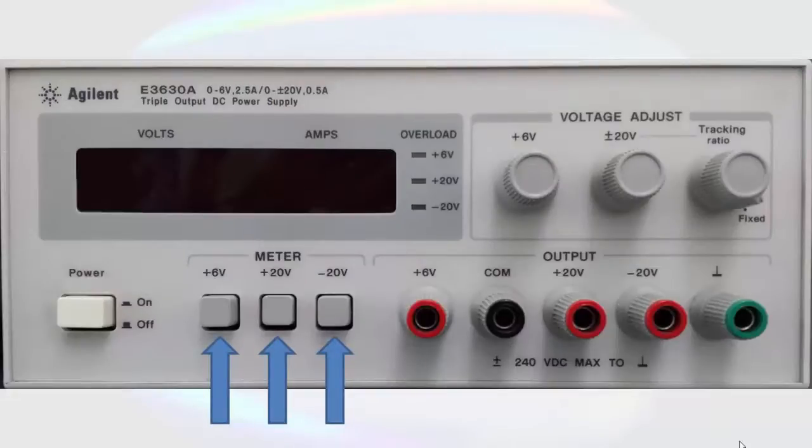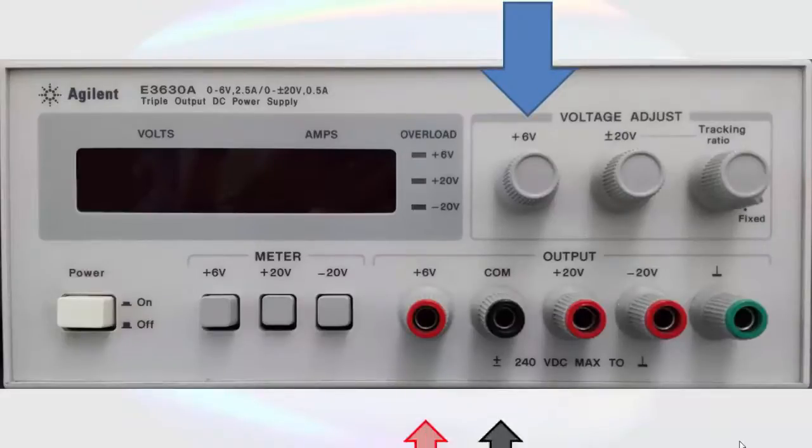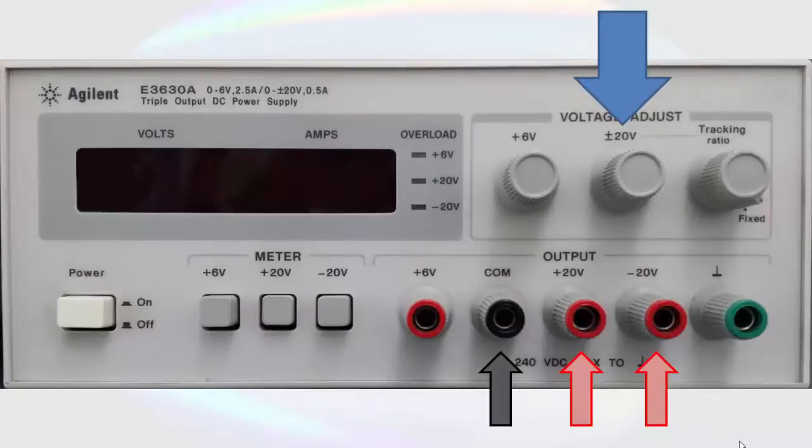Other important indicators we have on the front panel are the overload indicators. If any of these are lit up, it generally means we have a short circuit between power and ground. If any of these are lit up, we should turn off the power supply immediately so that we do not damage our circuit. The plus 6 volt knob controls the potential between the 6 volt output and the common terminal. The plus or minus 20 volt knob controls the voltage difference between the common and the 20 volt outputs.